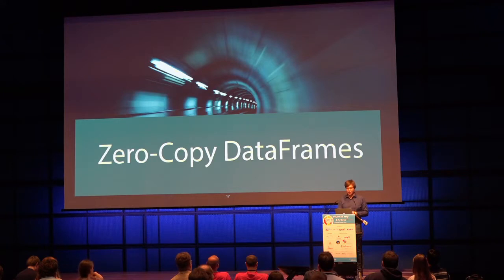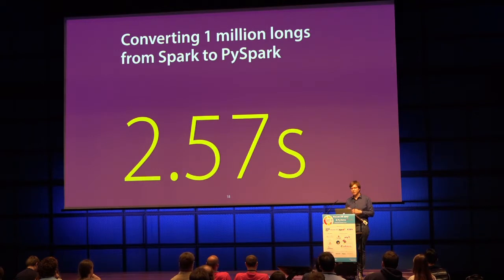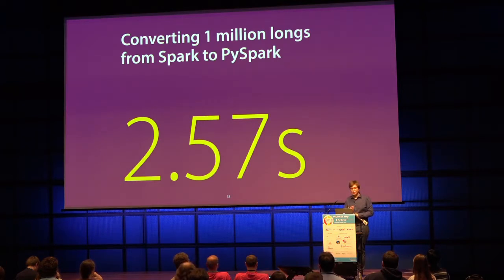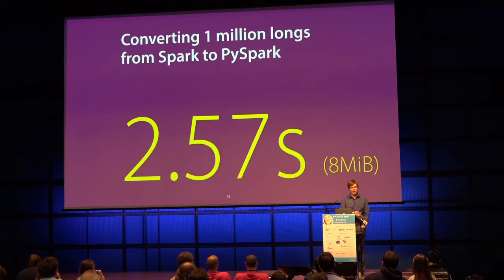A typical example where this matters is large-scale distributed execution engines like Spark. If you've used Spark from Python and tried to retrieve your result as a DataFrame, it's quite slow because of a really big overhead: serializing Java objects, serializing to Python, making it into the structure Python expects. Currently it takes about two and a half seconds to write one million integers from a JVM process to a Python process — that's only eight megabytes. So even sending small data from JVM to the Python world takes two and a half seconds, which is really long.